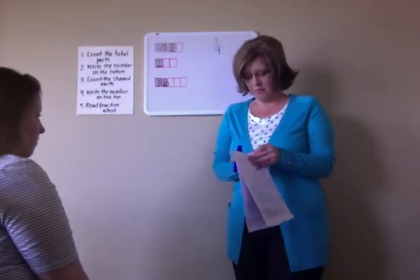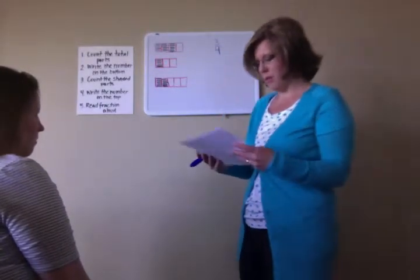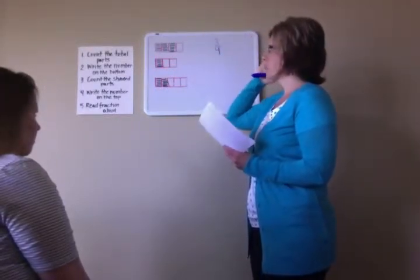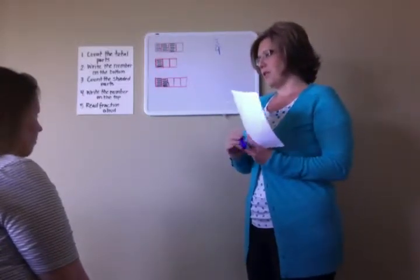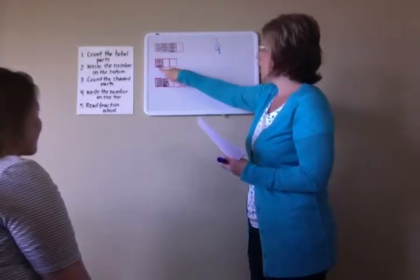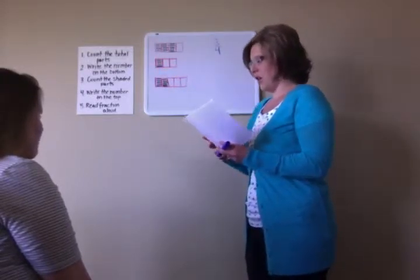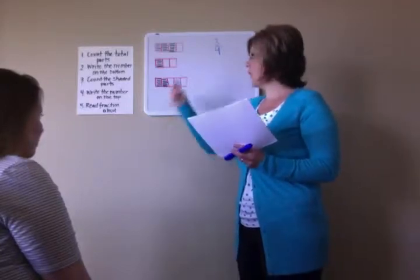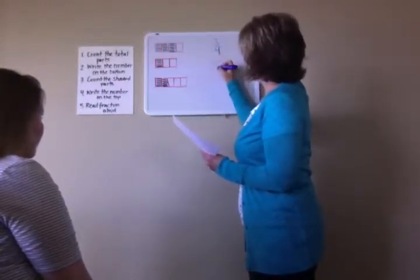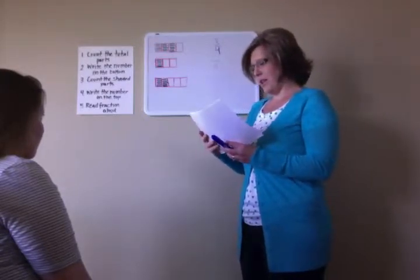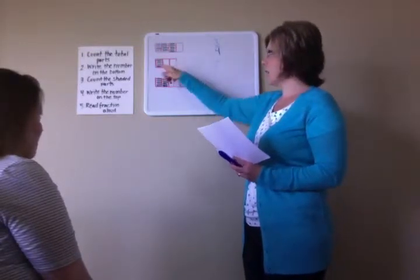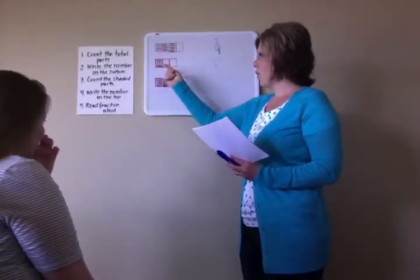Now we're going to use another example and practice a little bit more. So we're going to look at this fraction right here. What is the first thing that we do? Count the total parts. We count the total parts. That's correct. Count with me: one, two, three. And then what's the next step? Write the number on the bottom. That's right. So we'll write three below our division bar. And then next, what do we do? Count the shaded parts. We count the shaded parts. And how many shaded parts are in this fraction? One. One. That's correct.